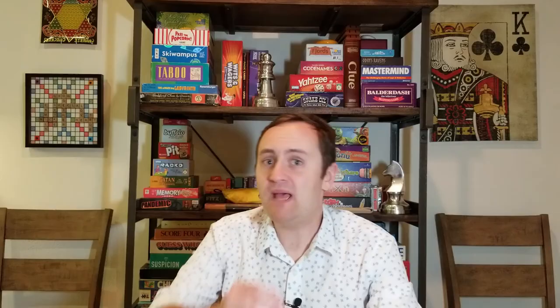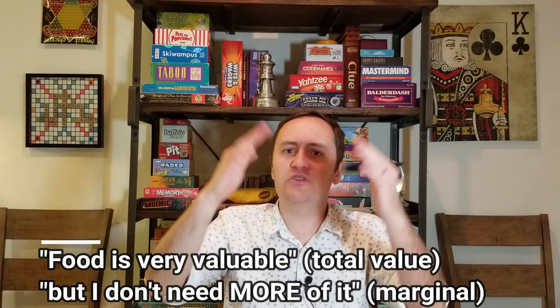Let's think about what that distinction is. Imagine you have a well-stocked pantry at home — a lot of food. The total value of all that food might be $300; you like having it around. But now that you have such a well-stocked pantry, you don't really need any more food. So even though the total value of the food is $300, the marginal value of adding one more can of chili is something like $0. Even though the food as a whole is very valuable, the value of one additional item is not very high. That's the distinction between total and marginal benefit.